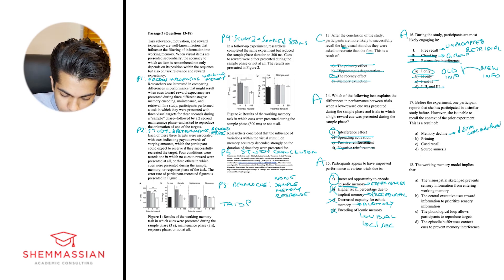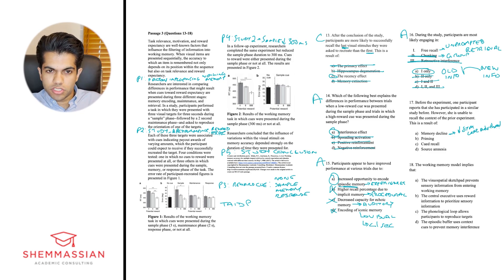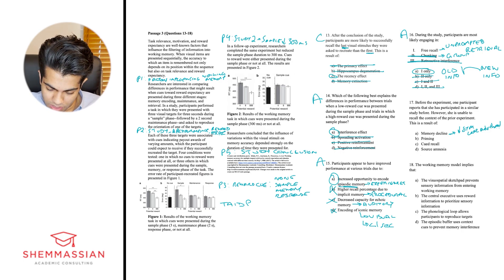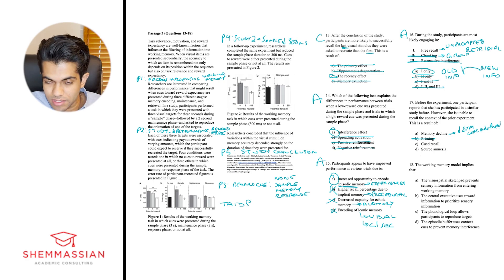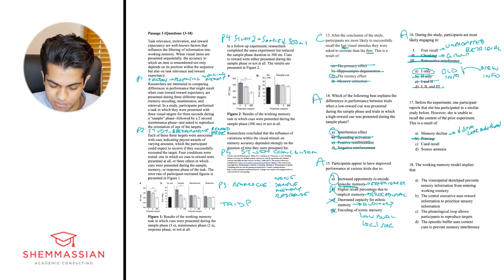B, priming, is when exposure to one stimulus affects your perception of a subsequent stimulus. The question stem is about a participant who feels she's been in a similar study but can't remember the context — that's not related to the definition of priming. So eliminate B. C, cued recall, is basically the opposite of free recall — prompted memory retrieval. That's also not related to what the question stem is presenting. So I'd eliminate C as well.